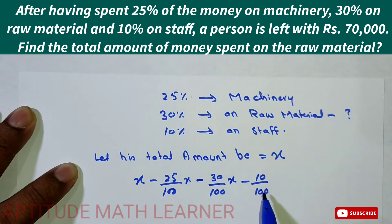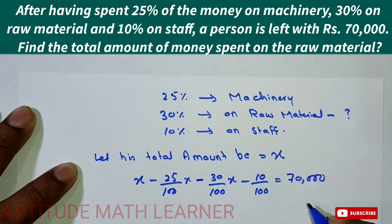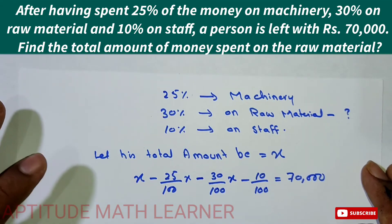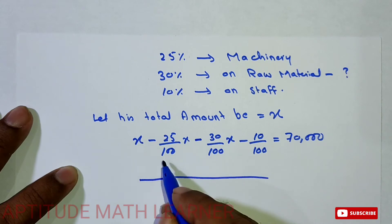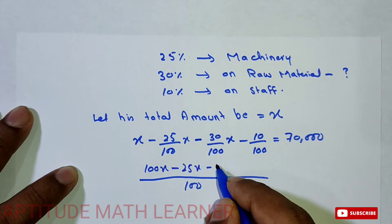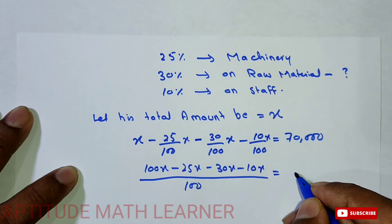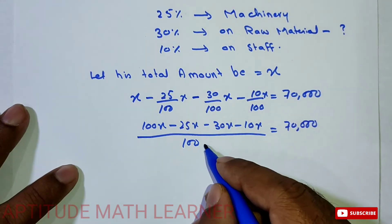After spending these amounts on machinery, raw material, and staff, from the total amount he is left with rupees 70,000. So our equation is: x - 25%x - 30%x - 10%x = 70,000. We take LCM as 100, giving us 100x - 25x - 30x - 10x over 100 = 70,000.